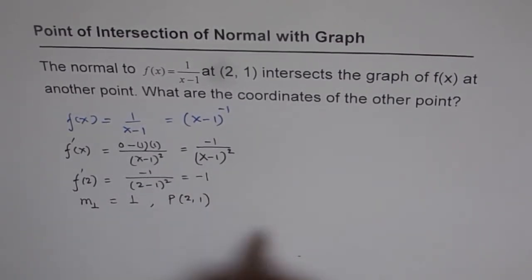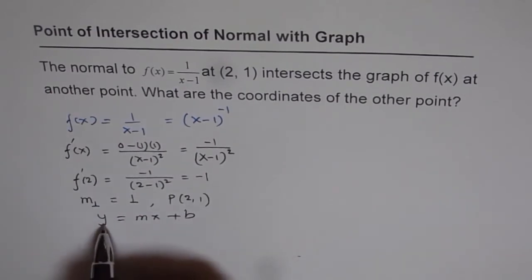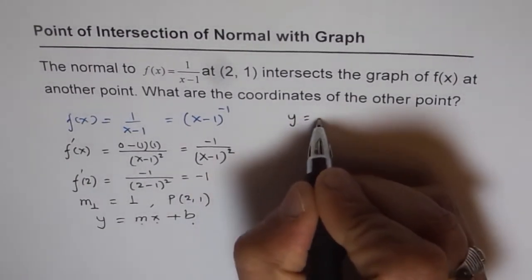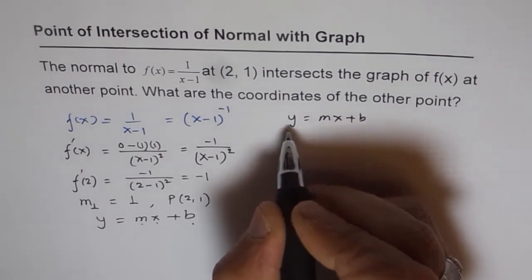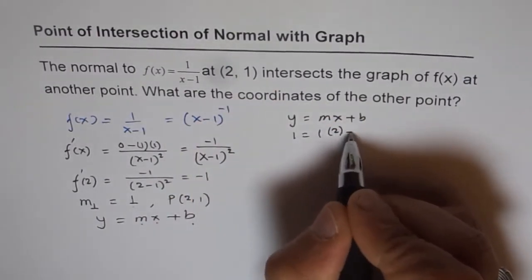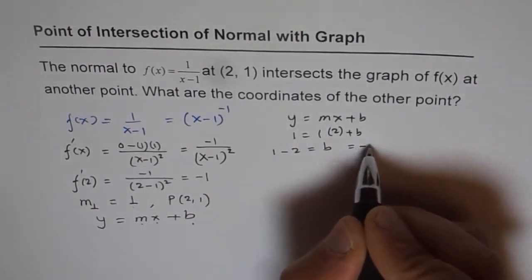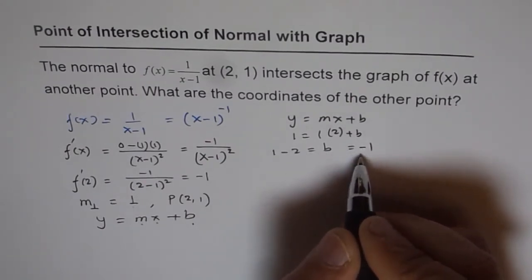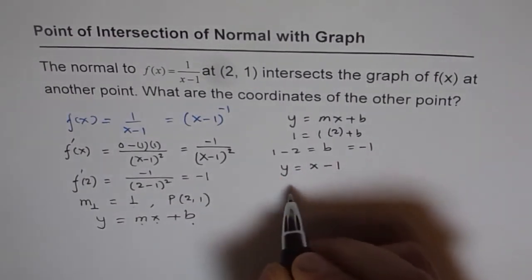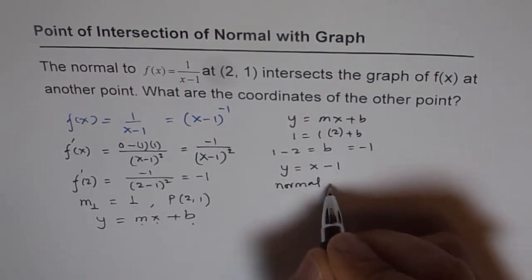The equation of this line can be written in the form y equals mx plus b. In this equation, we can plug in y equals 1, m equals 1, and x equals 2 to get the value of b. So we have 1 equals 1 times 2 plus b, which gives us 1 minus 2 equals b, so b equals minus 1. Since b is minus 1, we can now write down the equation of the normal, which is y equals x minus 1. So y equals x minus 1 is the normal to the given function.